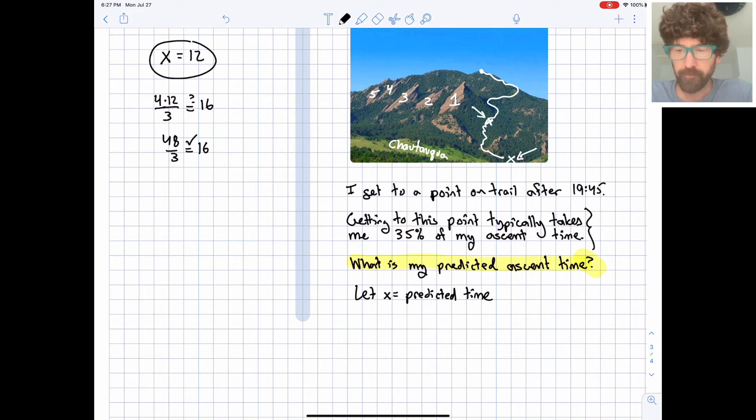And from there, what we'll do is use x to write an equation. Let's turn our word problem into a mathematical sentence. And what I can see right here is this 35% of my ascent time. So I'm going to write that in mathematical language, 35% is 0.35, of often means times, and x we just said is my predicted ascent time. And that's going to equal 19 minutes and 45 seconds.